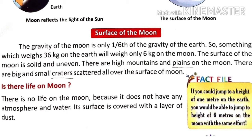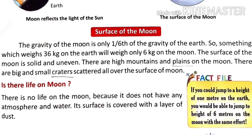Fact file: If you could jump to a height of 1 meter on the Earth, you would be able to jump to a height of 6 meters on the Moon with the same effort. So if you jump 1 meter on Earth, you can jump 6 meters on the Moon with the same effort.